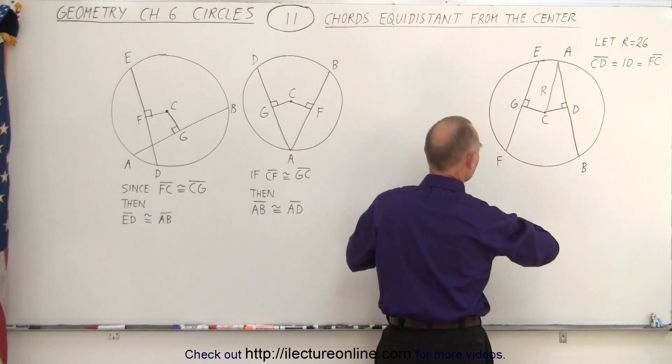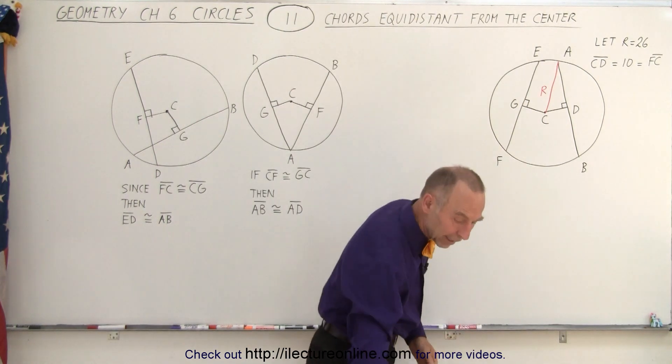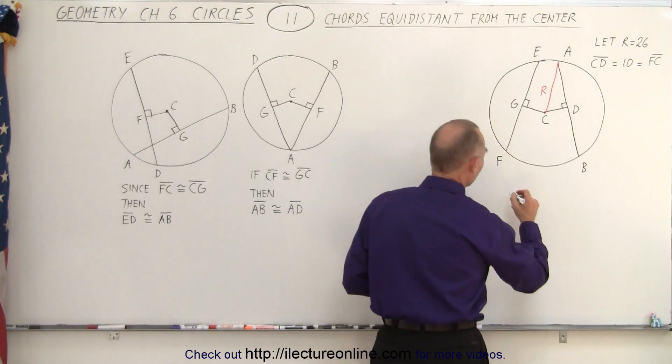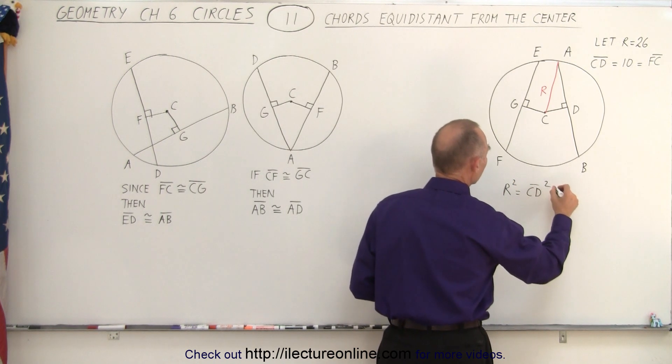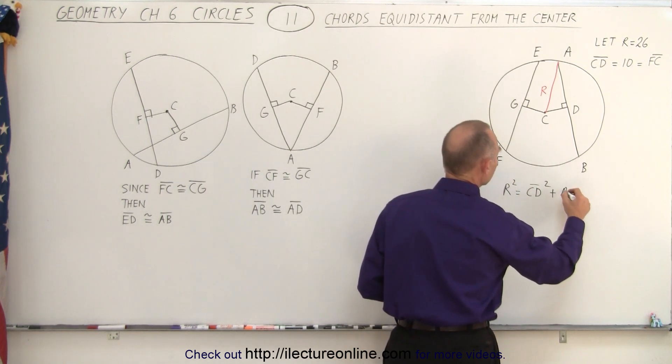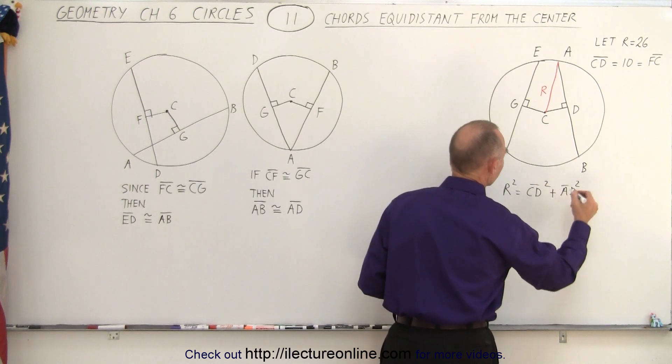So we can say there that the radius squared must equal the distance from C to D squared plus the distance from A to D squared as well. There we go.